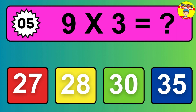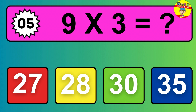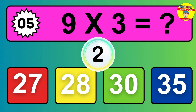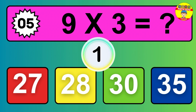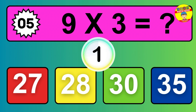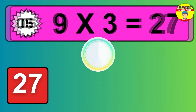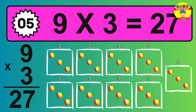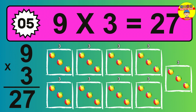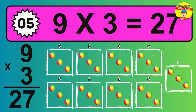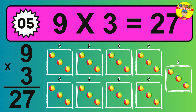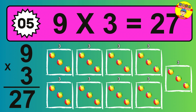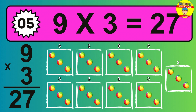Question 5. 9 times 3 equals what? The answer is 9 times 3 is 27. To calculate, we have 9 groups with 3 balls each one. So how many balls do we have? 27 balls.